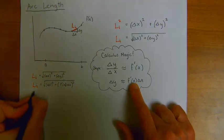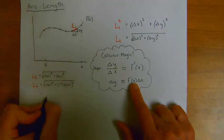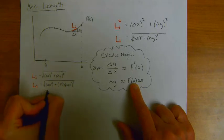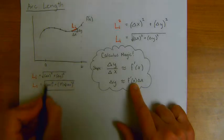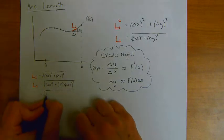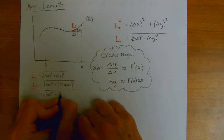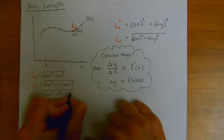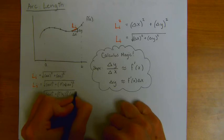I can do some factoring. So this is equal to the square root of, notice that there's a, maybe I'll write out one more step. This is delta x squared plus f prime of x sub i squared times delta x squared.